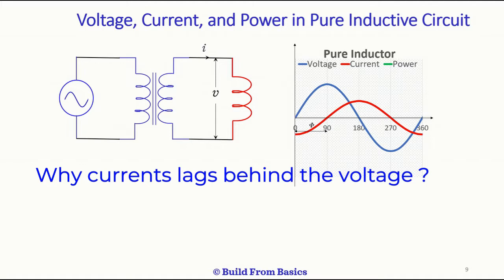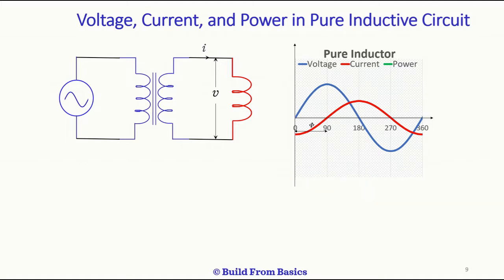As you can see, the current lags the voltage because this is a pure inductor. The current lags the voltage by 90 degrees, and I will explain here why it lags by 90 degrees.